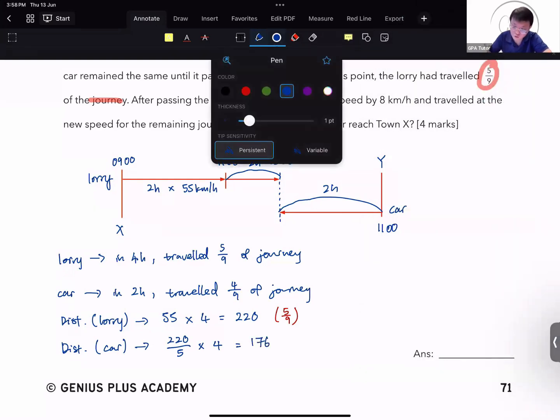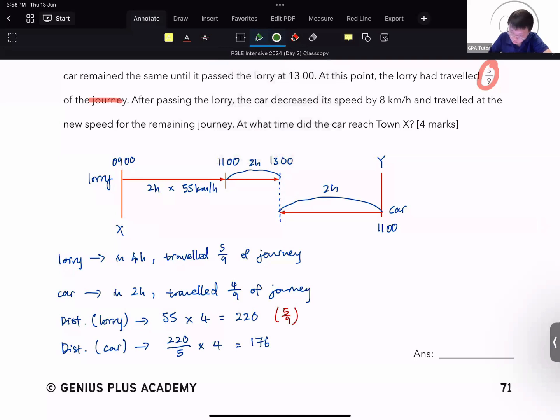To give you 176 km. So the car has traveled to this point in 2 hours, 176 km. While the lorry has to this point traveled 220 km. And that is what we know.